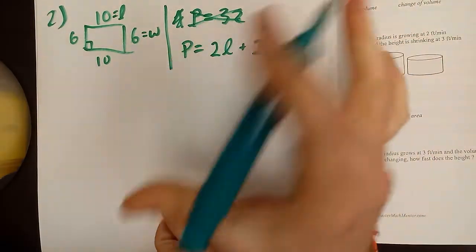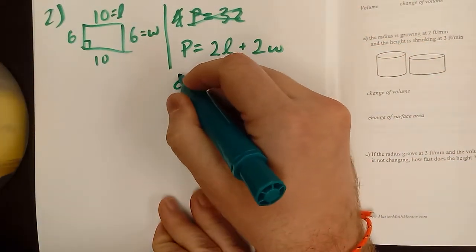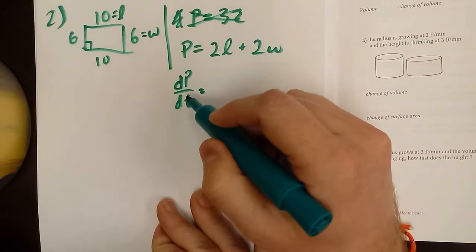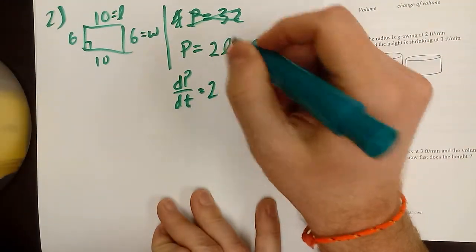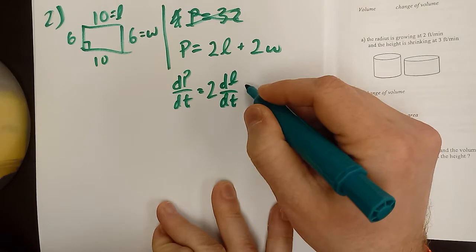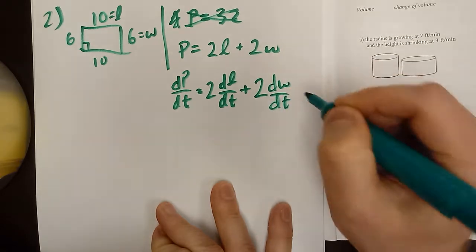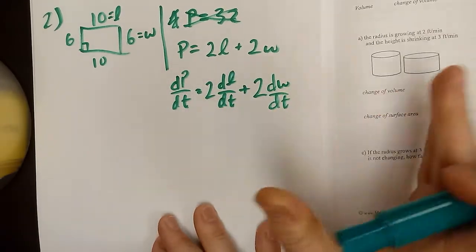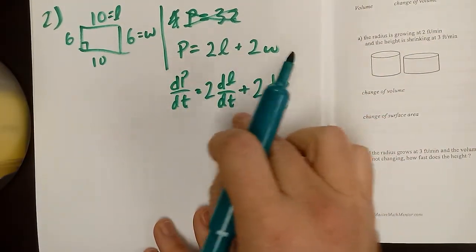So if I wanted to know how the perimeter was changing, I would look at how the perimeter changes over time. When I take that derivative, I get dP/dT. We're taking the derivative with respect to time, so this is going to turn into 2 · dL/dT — I use the cursive L just to make sure it doesn't look like a 1. And similarly the 2W term, when we take the derivative, is going to turn to 2 · dW/dT.